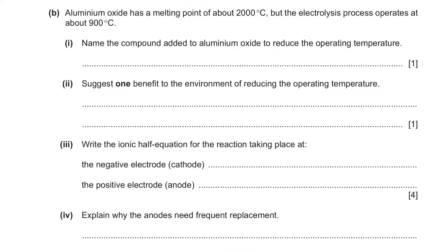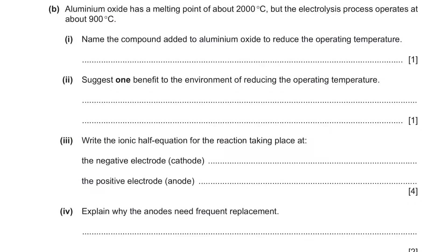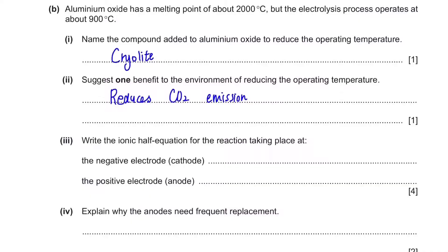Aluminium oxide has a melting point of about 2000°C, but the electrolysis process operates at about 900°C, so the operating temperature has been reduced. Name the compound added to the aluminium oxide to reduce the operating temperature — that is cryolite, which helps decrease the melting point. The environmental benefit of reducing the operating temperature is that it reduces carbon dioxide emissions, because less heat is needed, so less fuel is burned and less CO2 is produced.